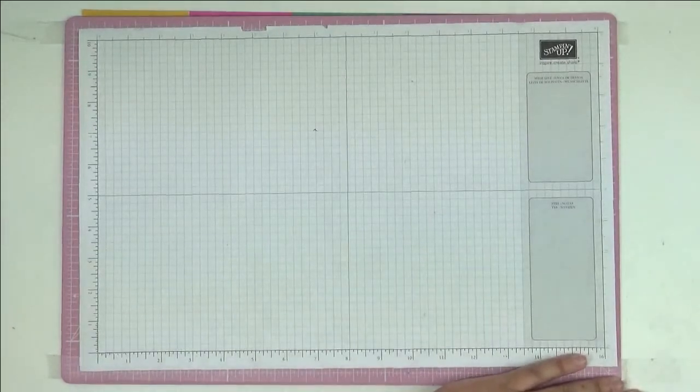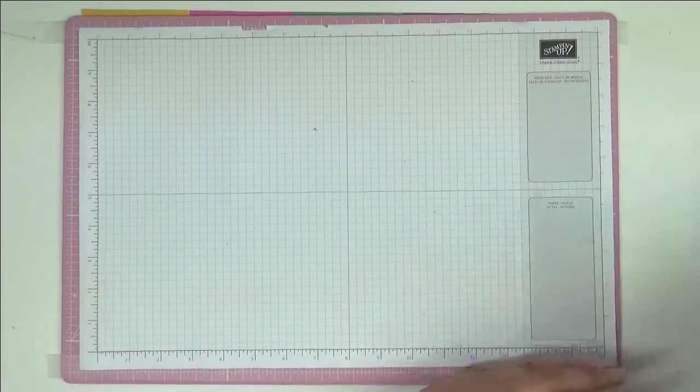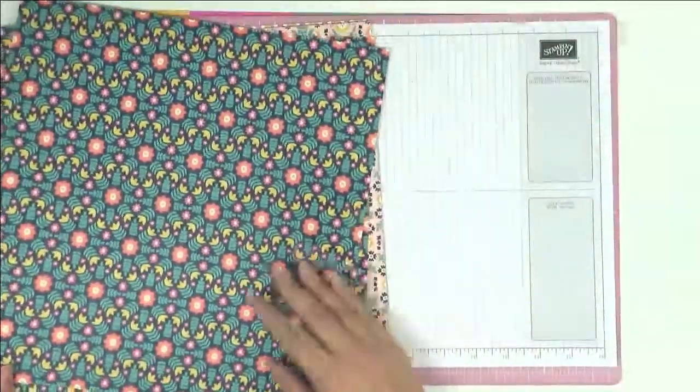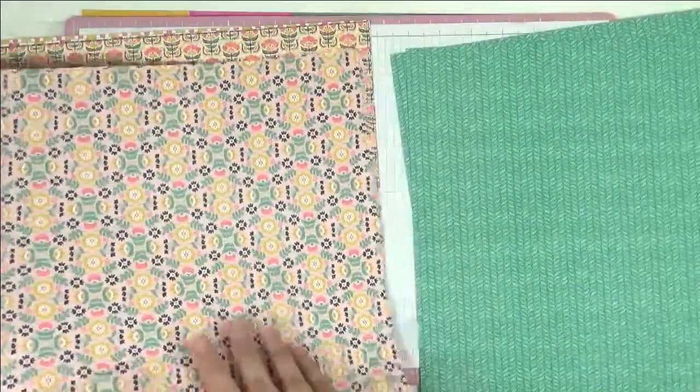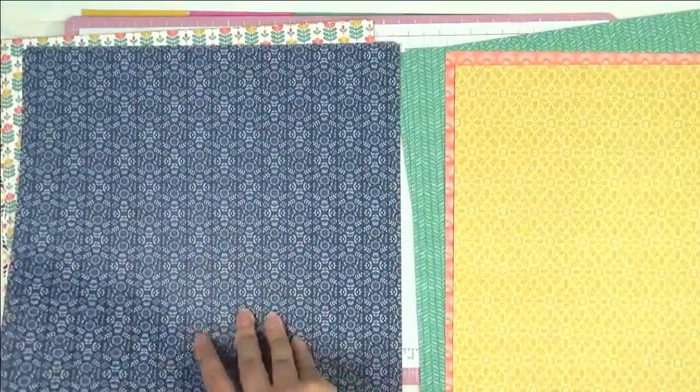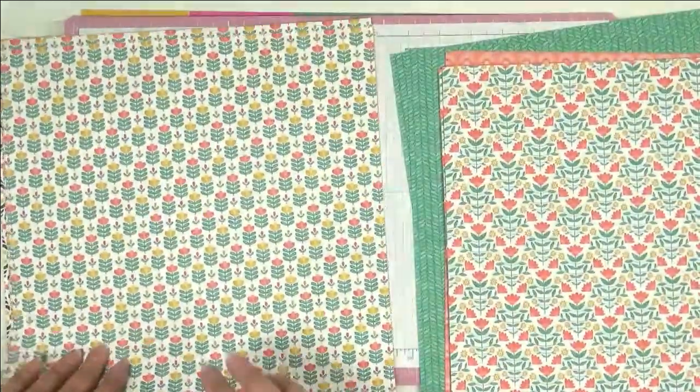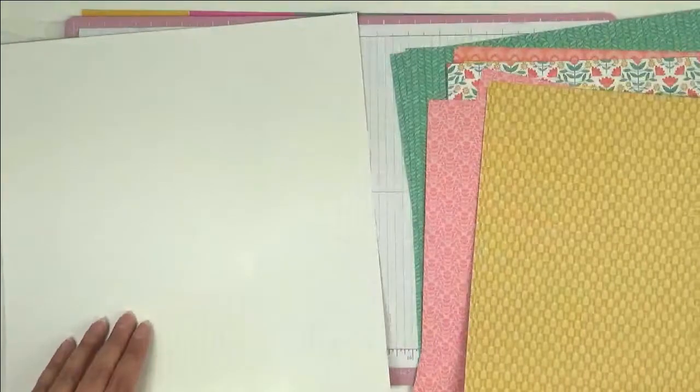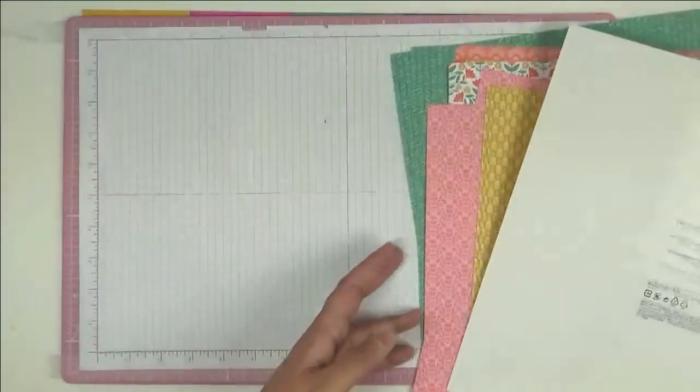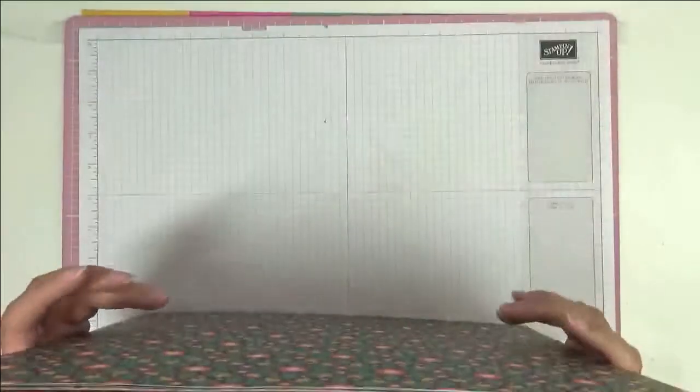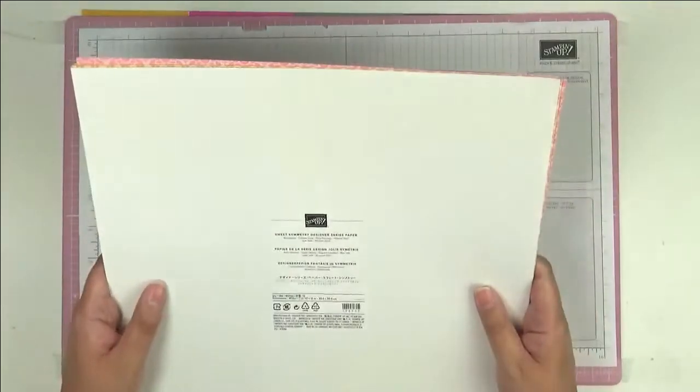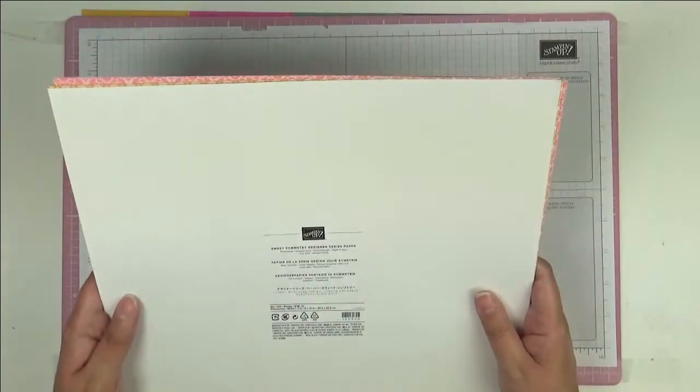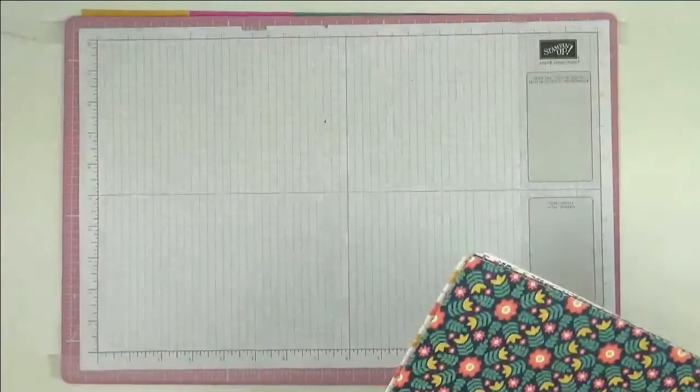This paper is called Sweet Symmetry. I can see here all the different designs. This also has a matching stamp and a punch. I only got the punch, I didn't get the stamp set. These colors are bumblebee, calypso coral, flirty flamingo, night of navy, just jade, and whisper white.